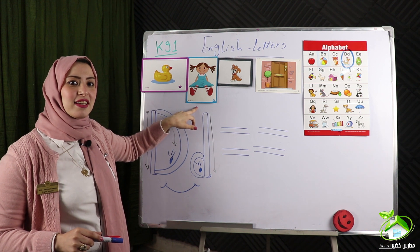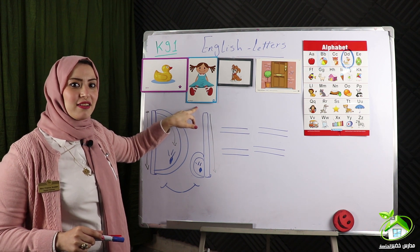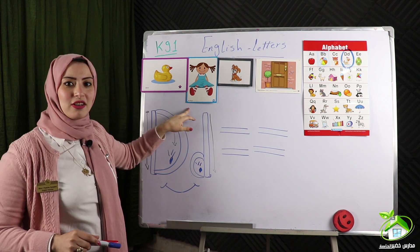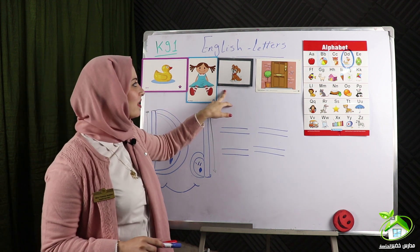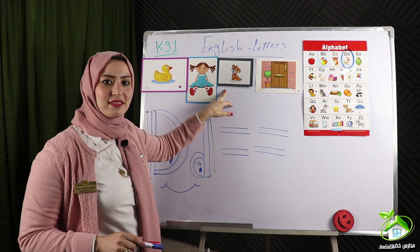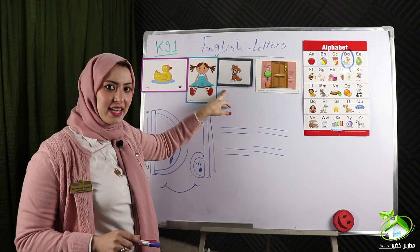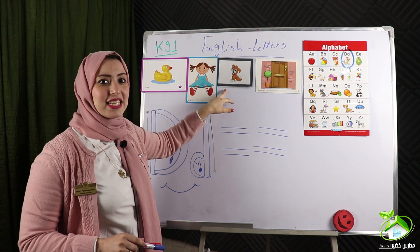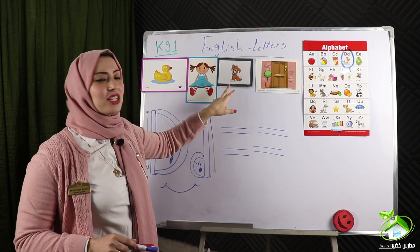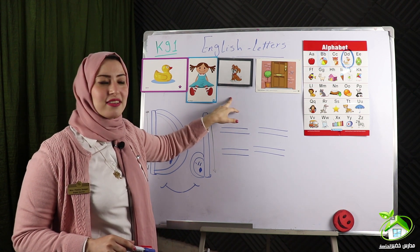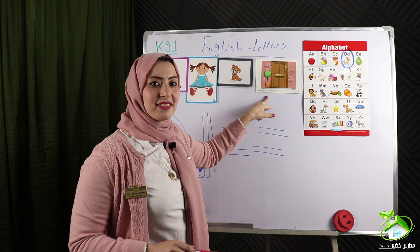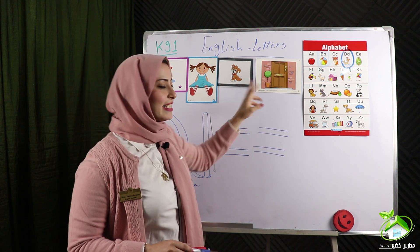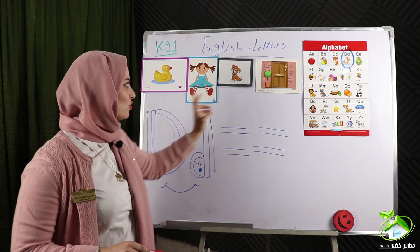What is it? D, D — doll. OK, what is it? Yes — dog. Excellent! D, dog, dog. What is it? Door, door. D, door.